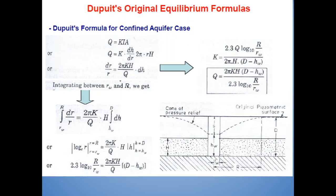Then, Dupuit's formula for the confined aquifer case. Here also, it has started with the Darcy's law, Q is equal to KIA. Q is equal to K(dh/dr)(2πr)H. H is the thickness of the bed, as you can see, thickness of the aquifer. So here, capital H is taken. So here, dr/r is equal to 2πKH/Q dh.